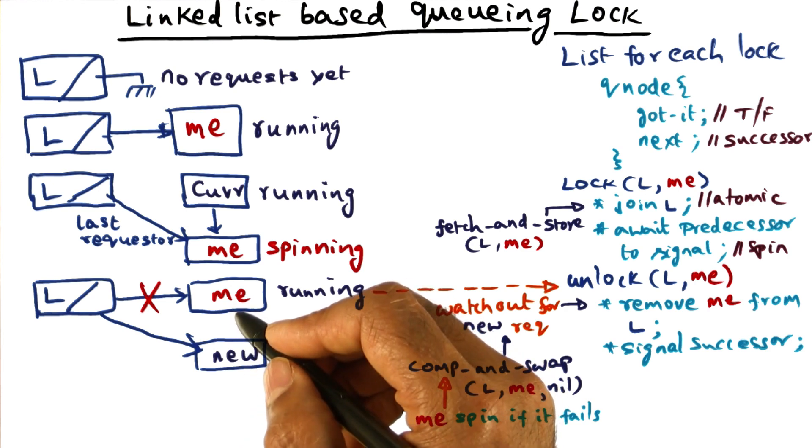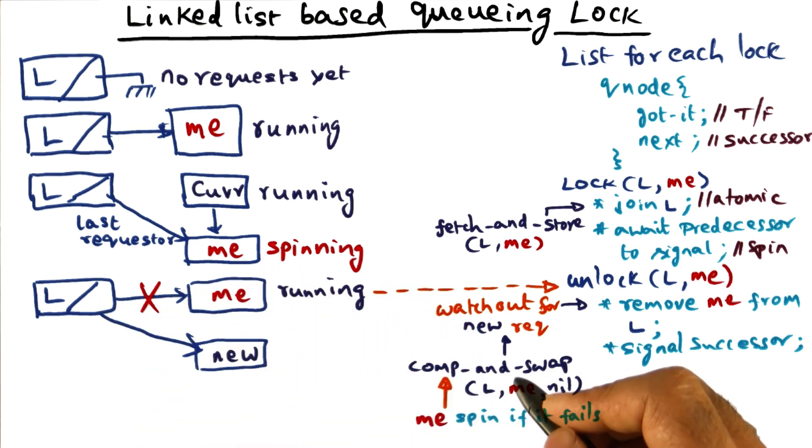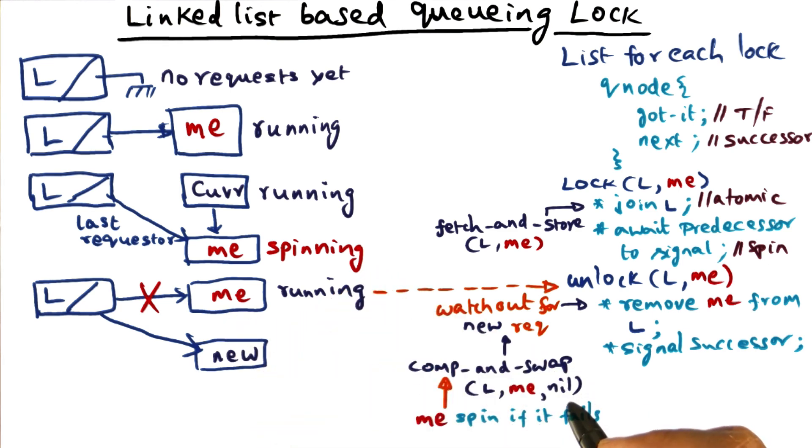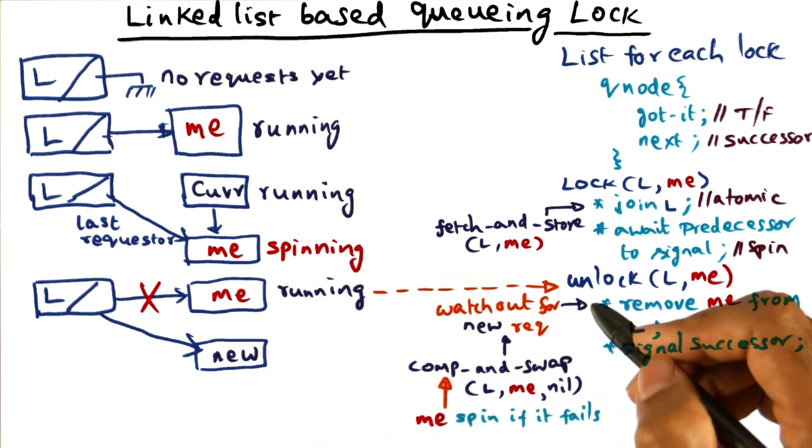That's the reason that I think that there's nobody after me. I was going to set this guy to nil. But I know the compare-and-swap failed, and therefore I know that there's a requester in formation, and I'm going to spin waiting for my next pointer to become not nil.